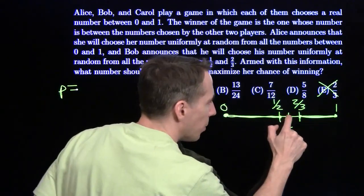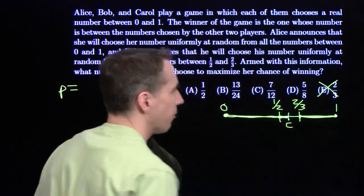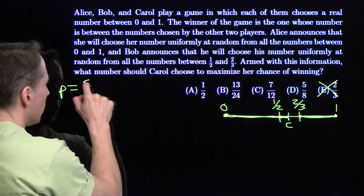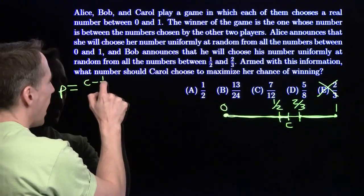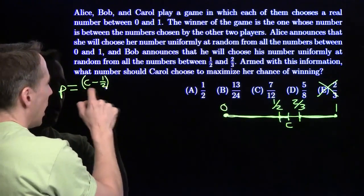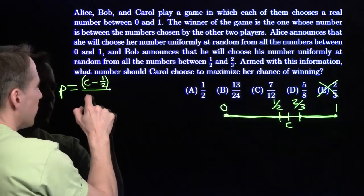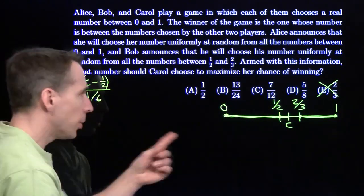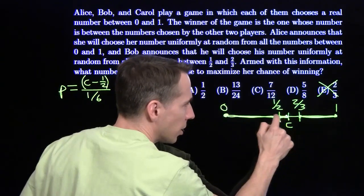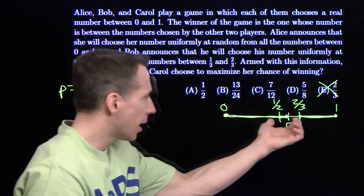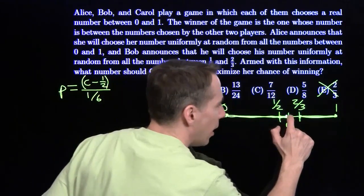First we're going to look at Bob choosing on the left. He has to choose in an interval that has length (C - 1/2) out of the whole interval he has to choose from, which is 2/3 - 1/2 = 1/6. That's the probability that he'll choose in here, just the length of this interval over the length of the entire interval he's choosing from.